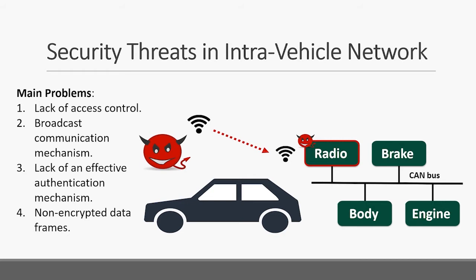There are four main reasons we summarized. The first is that many car systems lack access control, by which anyone can access the internal status of the car. The second is the broadcast communication mechanism of CAN buses. The third is that communication protocols lack an effective authentication mechanism. The final reason is that many data frames are non-encrypted, so it may cause data leakage.